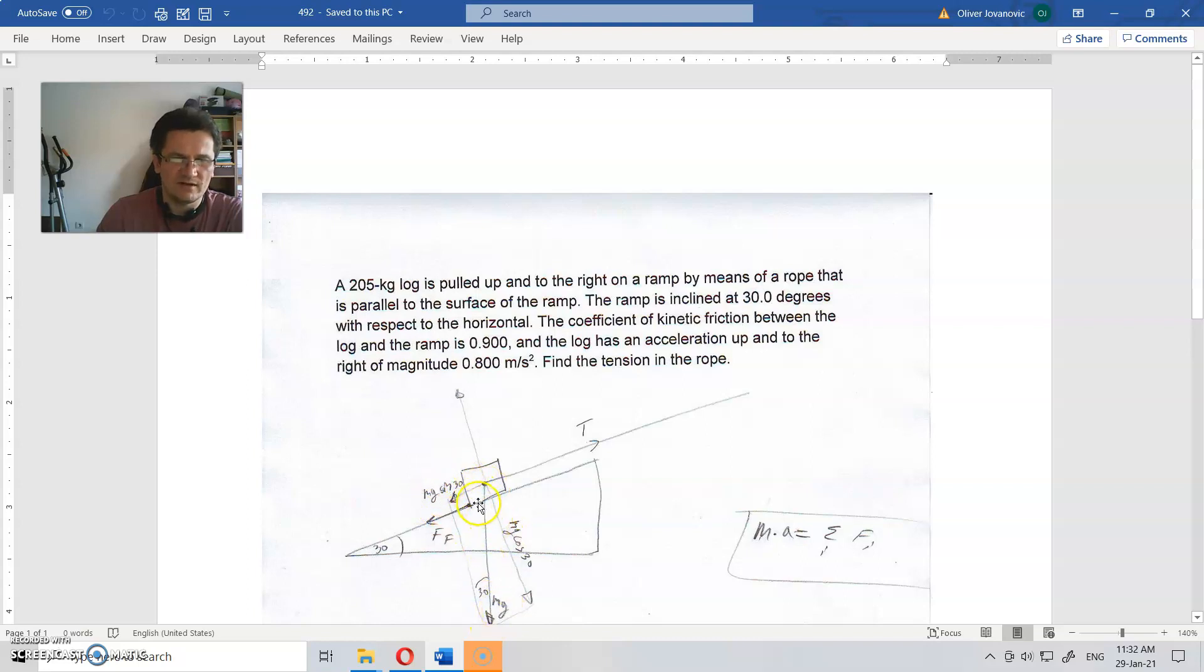The weight is mg, and the parallel component of this weight is mg times sine of 30. Why sine of 30? Because when you use trigonometry with the angle, this component is found by multiplying the weight by sine of 30.